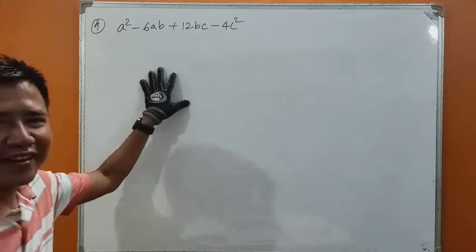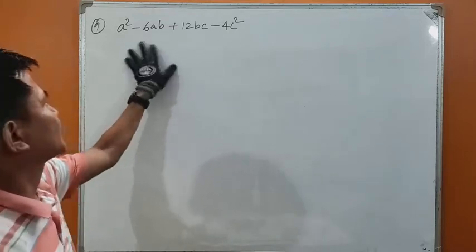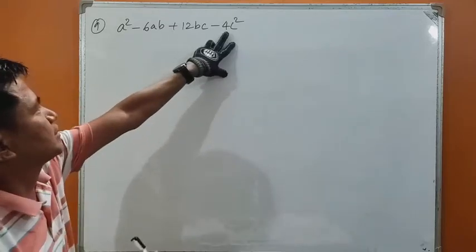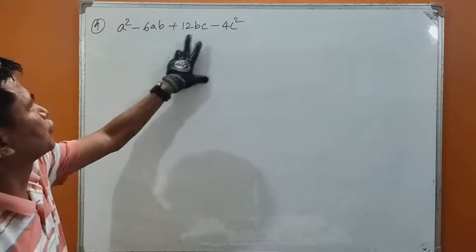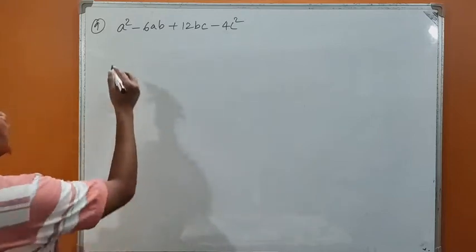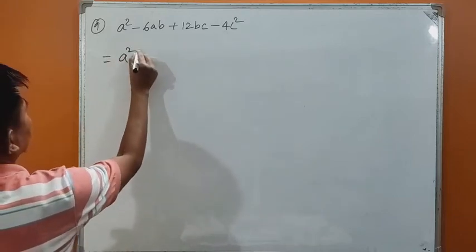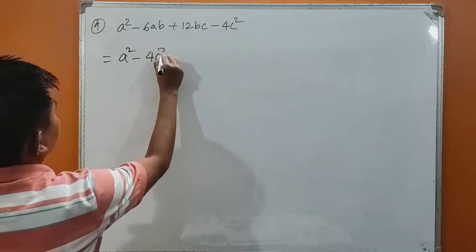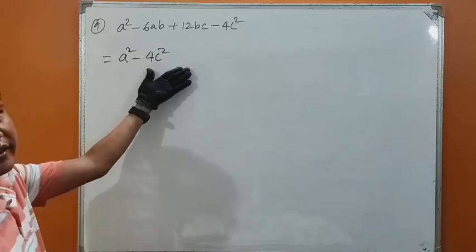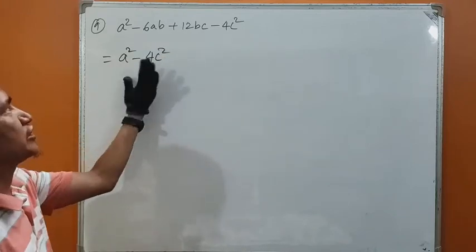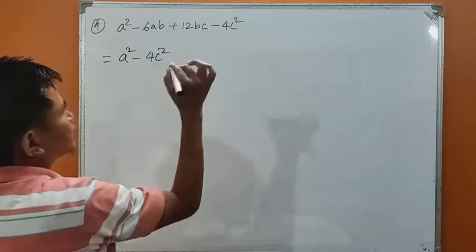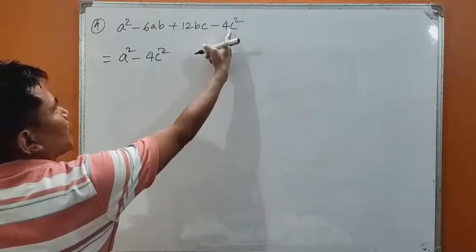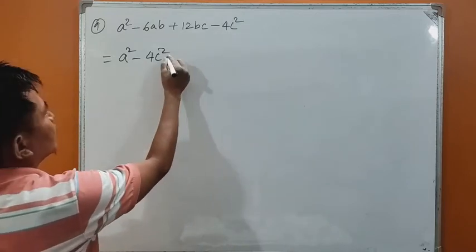Let us do question number 9. This is also a very easy sum. Let us bring this minus 4c square in the front: a square minus 4c square. I am just rearranging the numbers — the value does not change while changing the places. So minus 4c square comes in the front.